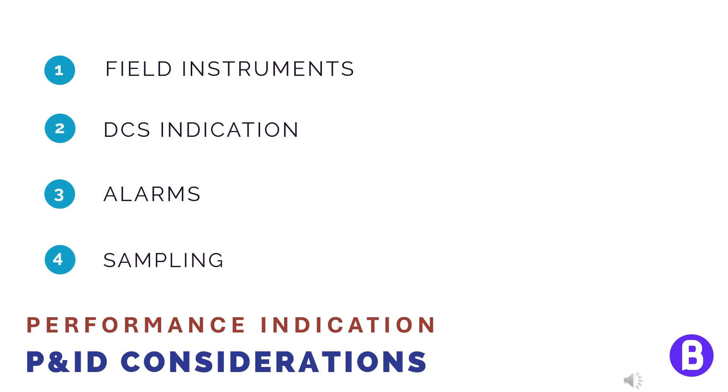Now, let's examine each one of these in detail. In a P&ID, we show instruments. Instruments are used to read process parameters.